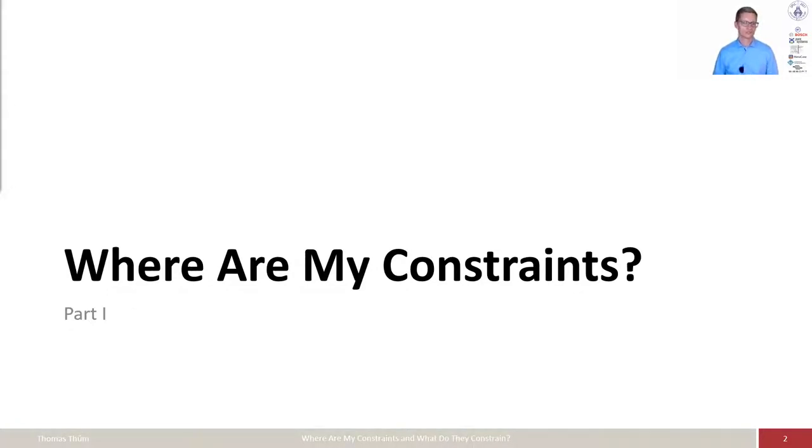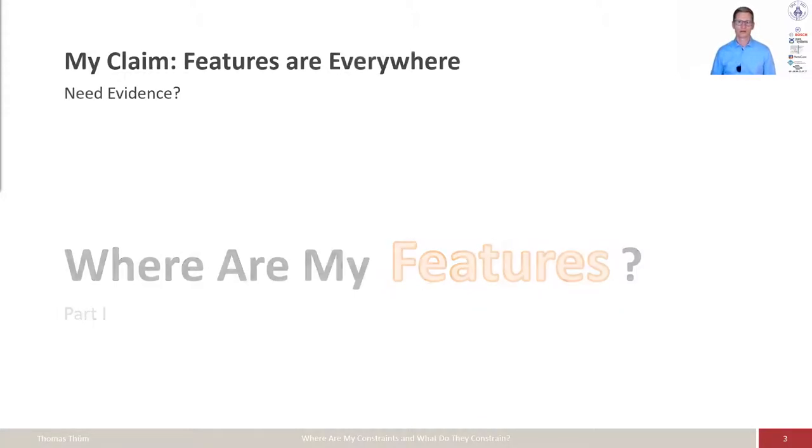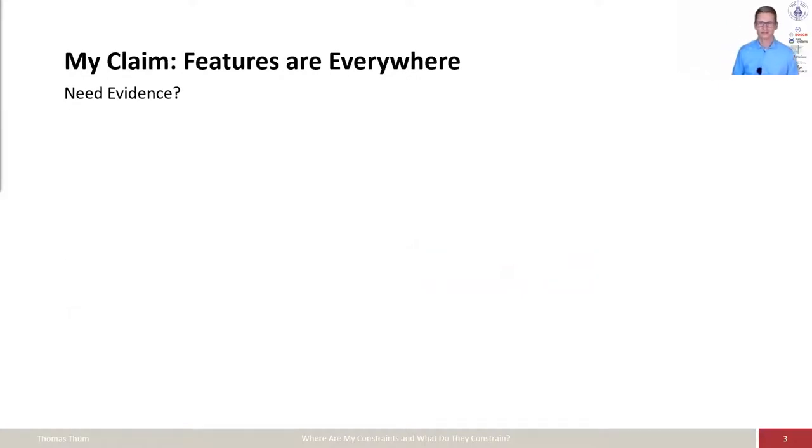Before we go into this question, where are my constraints, I'm talking about constraints between features. So we need to have a look at what are features. My claim here is, as a hypothesis, features are everywhere. In case you need any evidence, I will give you some examples here.